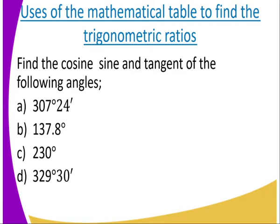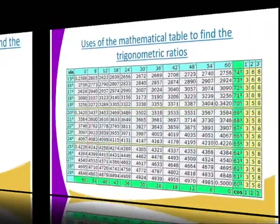When you happen to visit the mathematical table, you are going to get that we only get the trigonometric ratios of acute angles. Those angles that are greater than 90 degrees, so what do I do? All those angles that I have, they are more than 90 degrees. What do I do? Take for example, the first one.